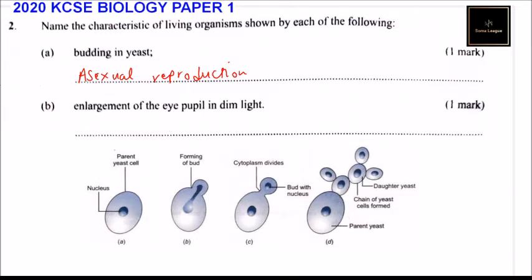The second part, that is part B, the enlargement of the eye pupil in dim light. When you enter in dim light, the eye pupil dilates to accommodate more light. So when you get into, when you get out of the house that has electricity, when you get outside, the pupil will dilate to accommodate more light.